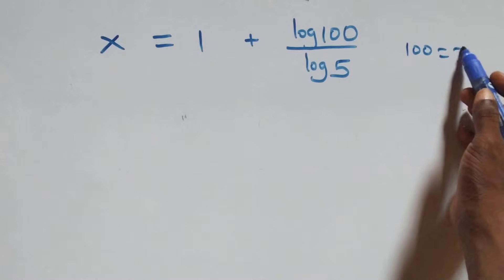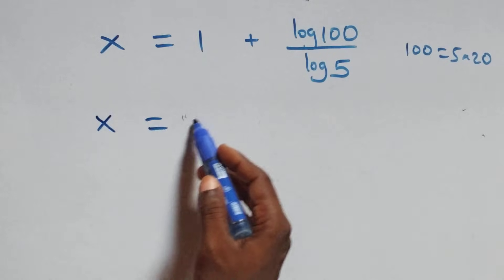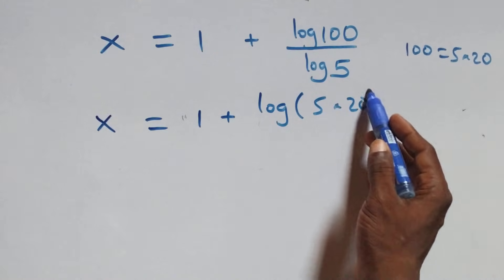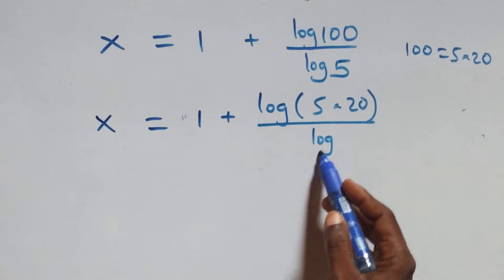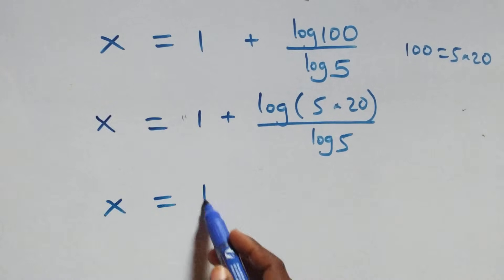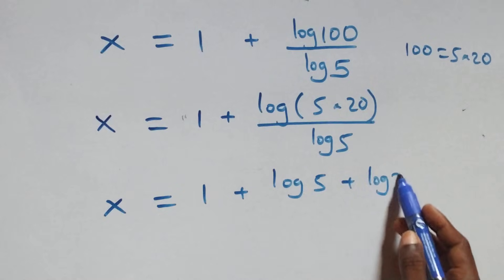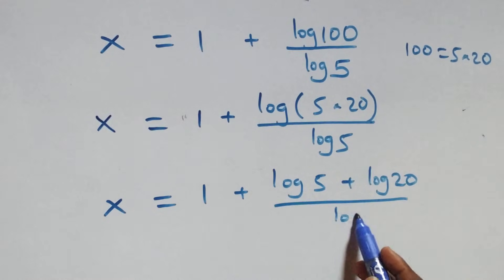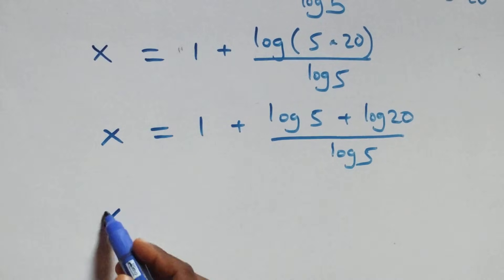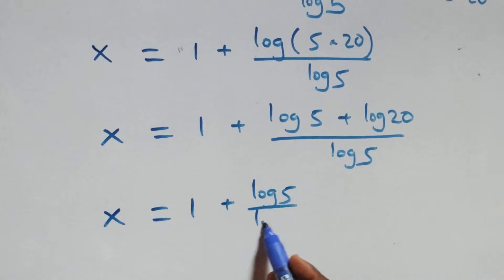Next, we can write 100 as 5 times 20. What we have here becomes x equals to log of 5 times 20 over log 5. Applying the log product rule, this becomes x equals to 1 plus log 5 plus log 20 over log 5.